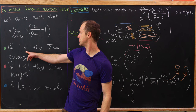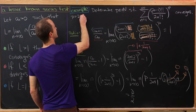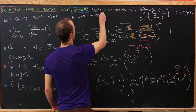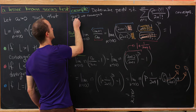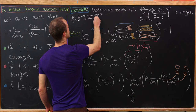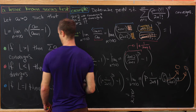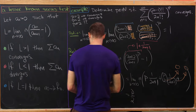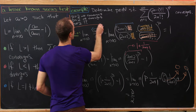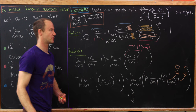So p over two is our value of l in Raabe's test. If p over two is greater than one — meaning p is greater than two — we get convergence. If p over two is less than one — meaning p is less than two — we get divergence. If p equals two, Raabe's test is inconclusive. Let's box this result: this is our classification for that series so far, and now let's investigate the p equals two case.